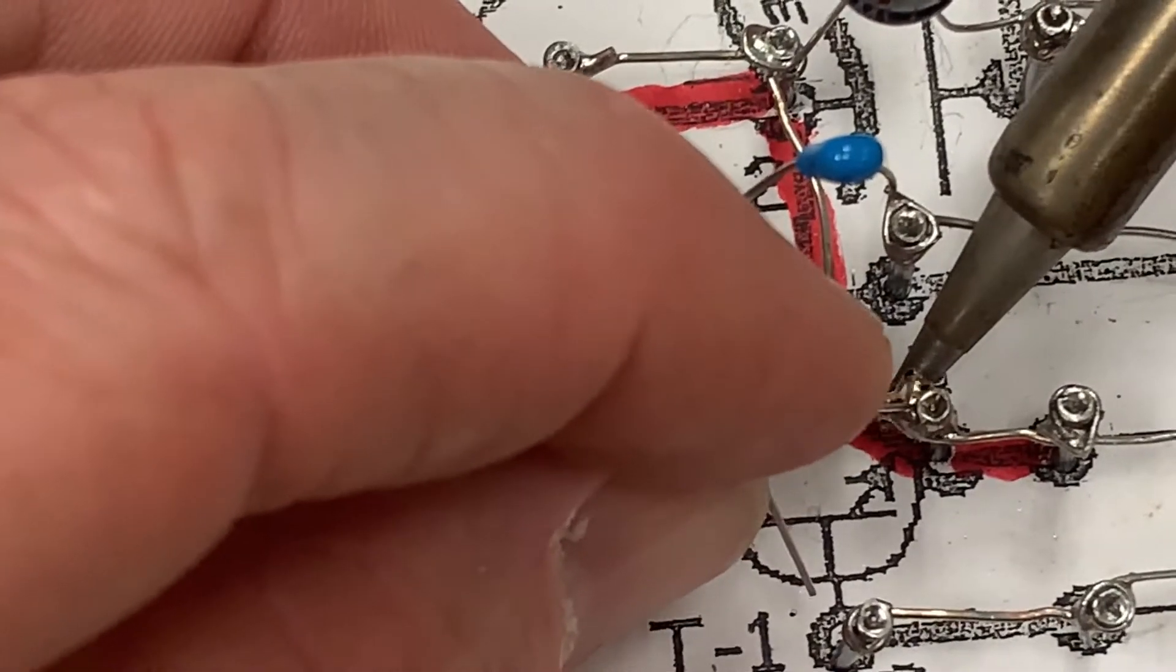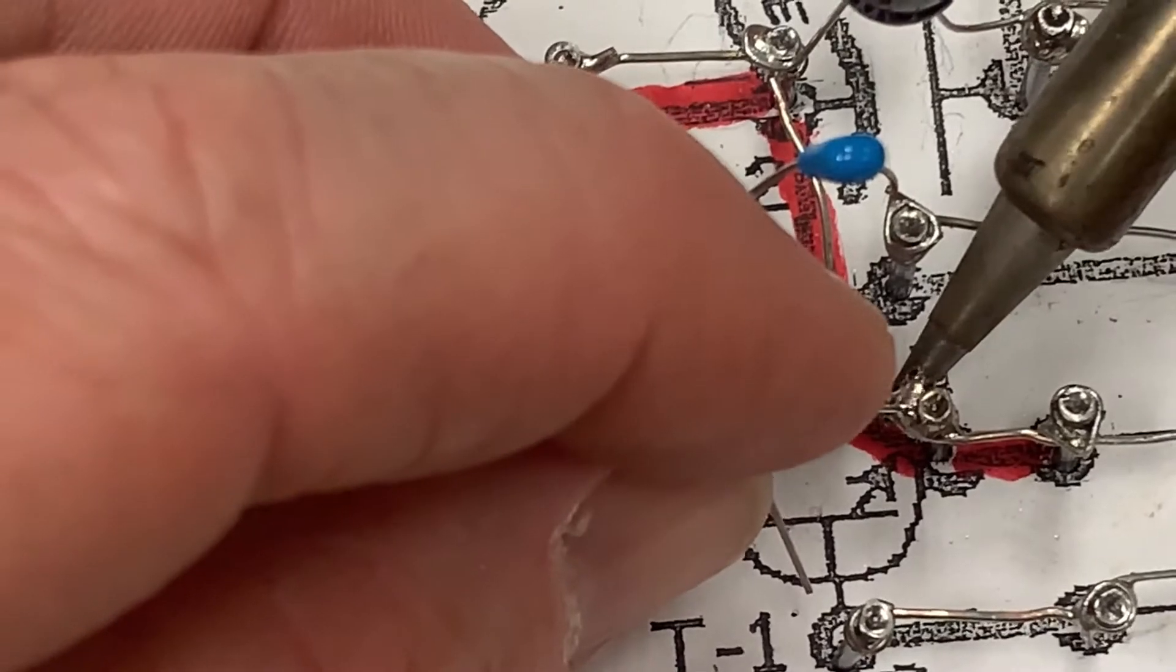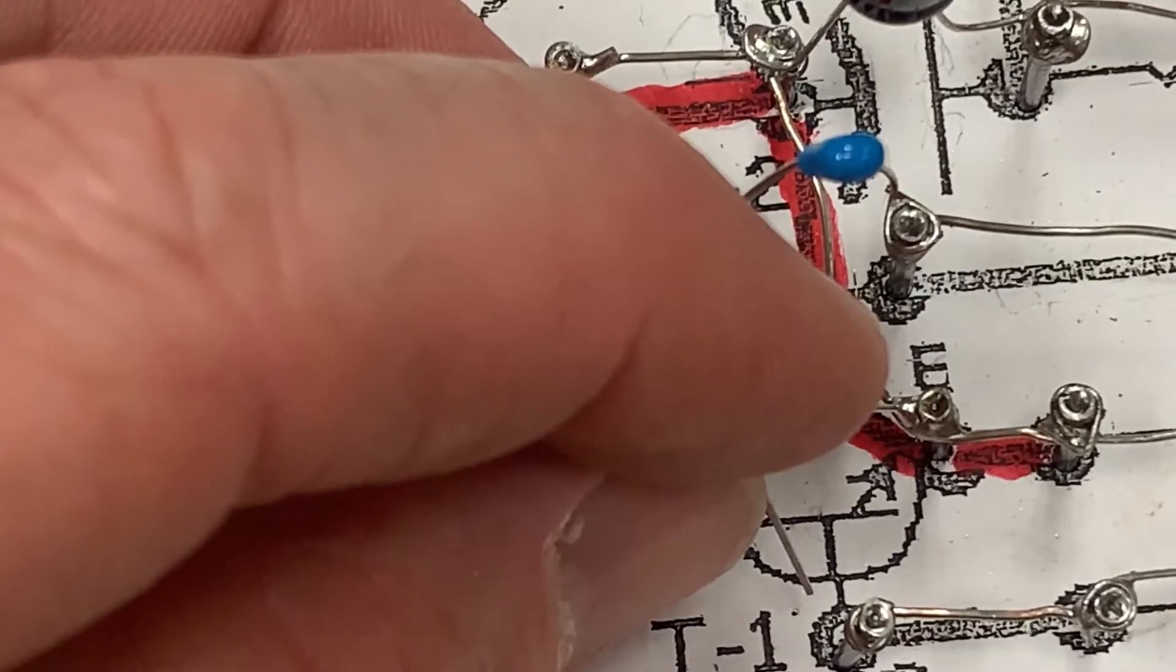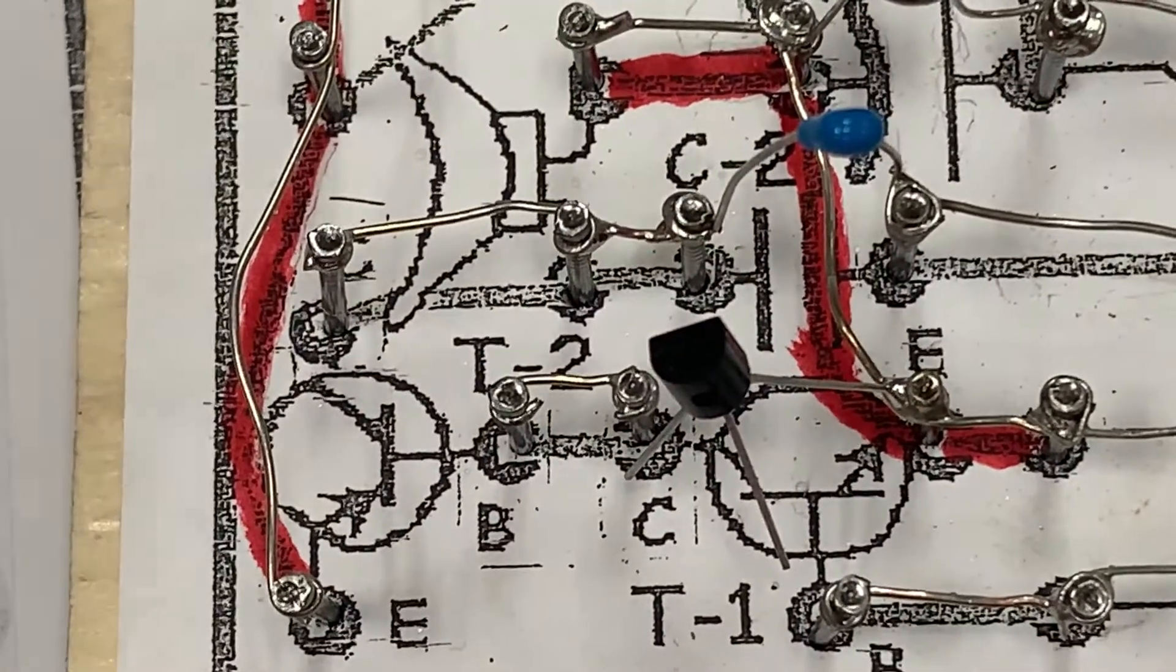And once it becomes liquified, I'm going to stick the leg of my transistor into that liquid solder and hold it there while it is hardening. Now it's hardened in place.